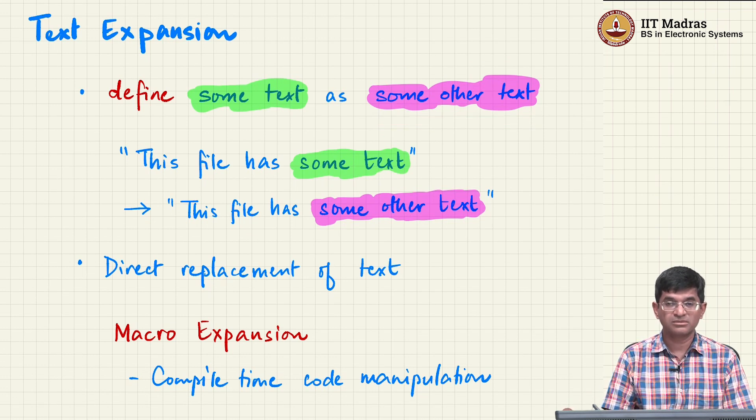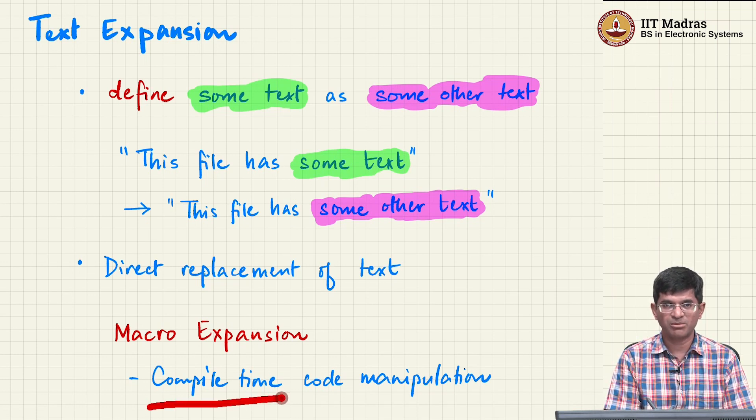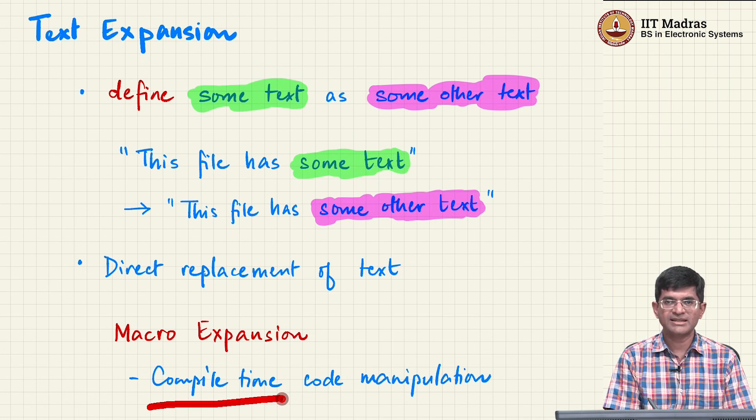This kind of macro expansion is used at compile time. That is another very important thing to keep in mind. Macro expansion happens only at compile time. What that means is after the compilation phase is over and you have got an executable program, there are no further macros. Everything related to macros has already been processed at this point.